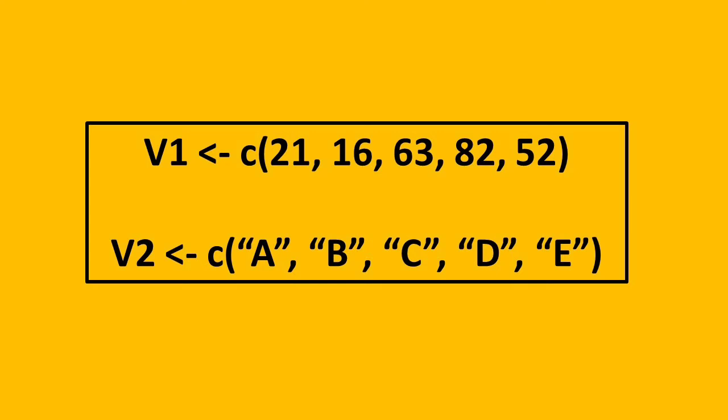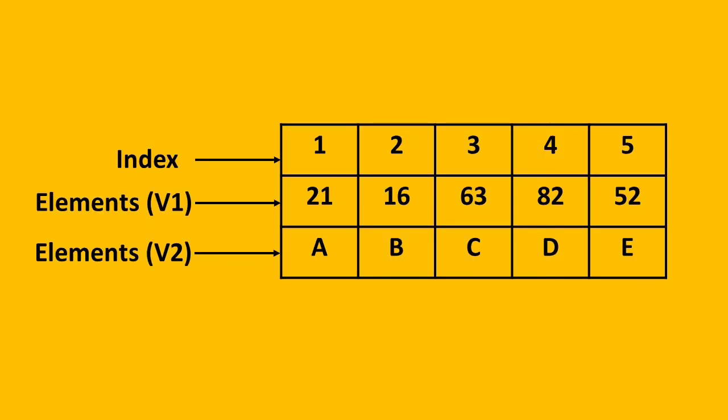Indexing of all the elements of both the vectors would be like 1, 2, 3, 4, 5. In R, the indexing starts from 1 and not from 0. So, to access any element of these vectors, we need to give this indexing. We need to use these references to access them.